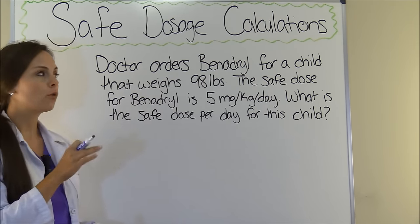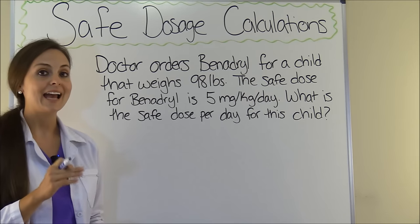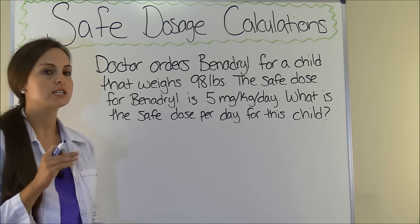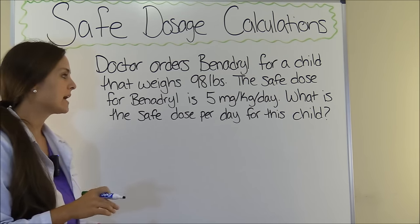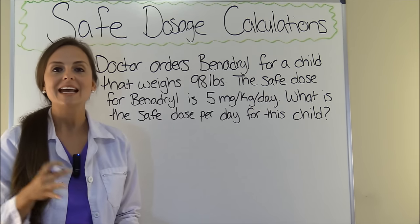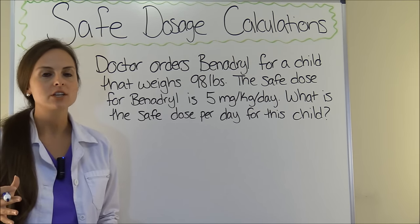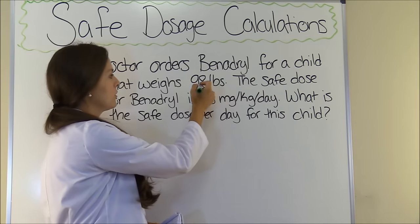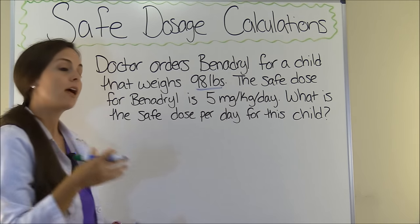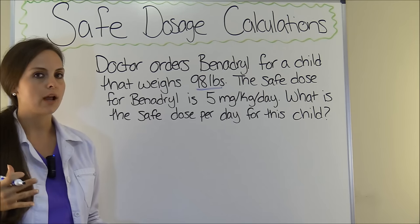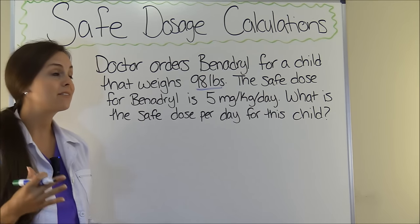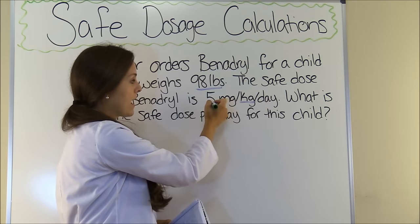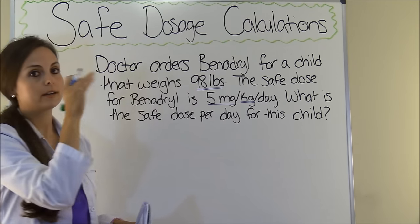The problem says: doctor orders Benadryl for a child that weighs 98 pounds. The safe dose for Benadryl is 5 milligrams per kilogram per day. What is the safe dose per day for this child? Anytime you're solving safe dosage calculations there are some things you need to know. First, you need to know the child's weight — the child weighs 98 pounds. Then you want to know the safe dose range. For Benadryl, a child can have 5 milligrams for every kilogram per day.